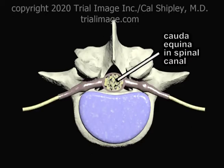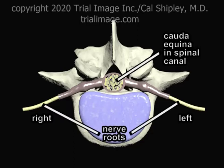Within the canal is the nerve bundle, which is the cauda equina, from which originates both a left and right spinal nerve root.